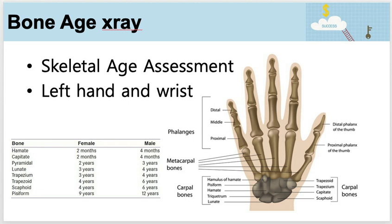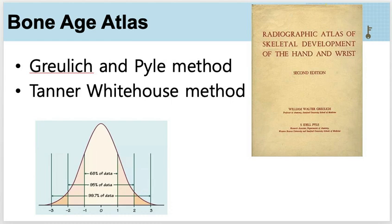The bone age x-ray is an estimation of the maturity of a child's skeletal age and correlates it with chronological age. You can see in here the different bones that compose the hand and you can take this into account by comparing it using the Greulich and Pyle method or the Tanner Whitehouse method.